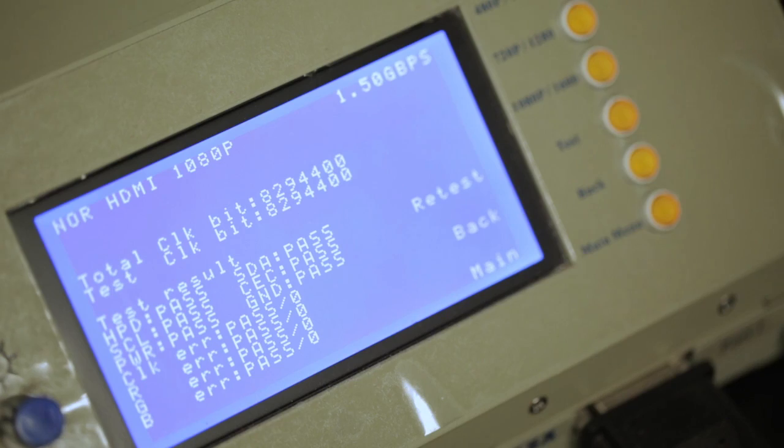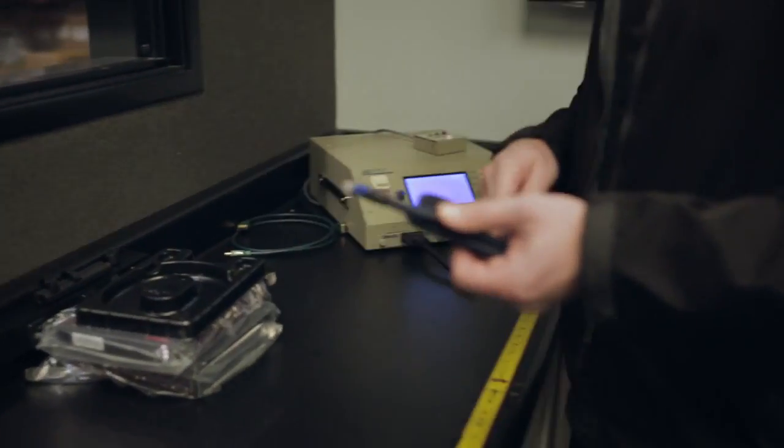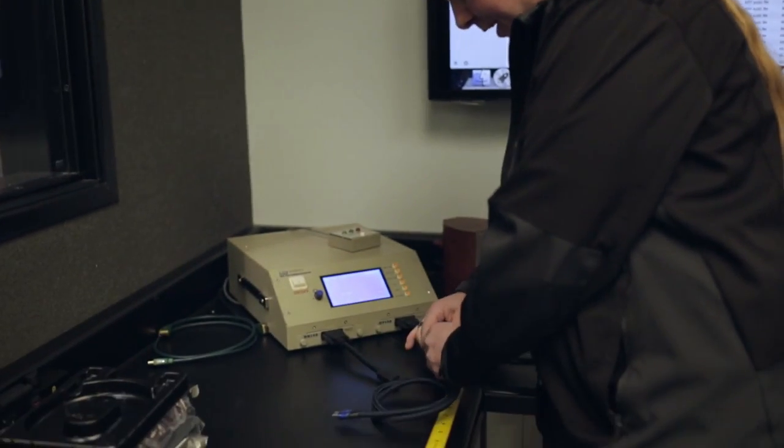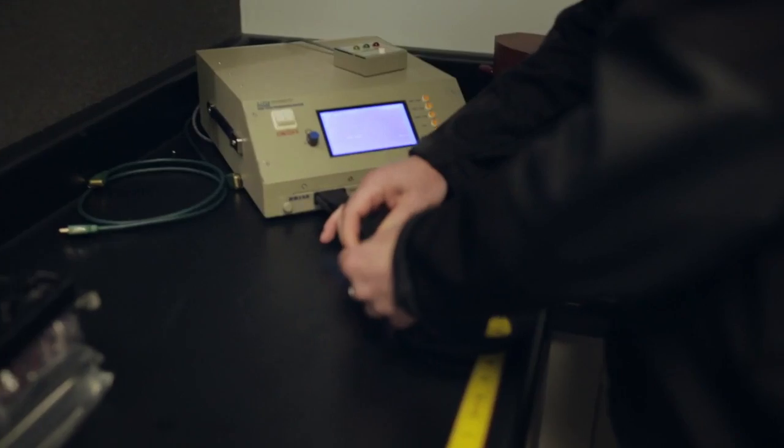This is our HDMI tester right here. What kind of tester is it? It's a BER machine. It's a bit error rate. It runs every bit of information through the cable we possibly can on a random test.